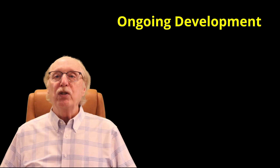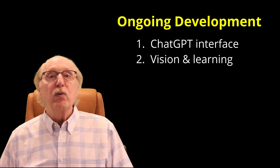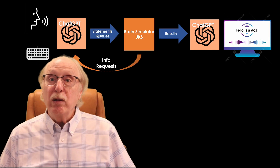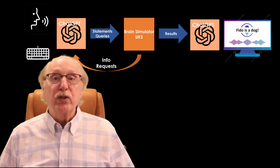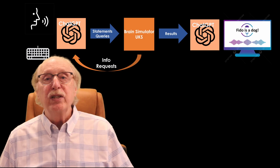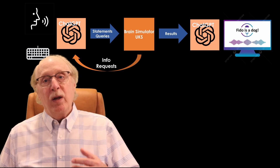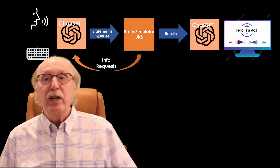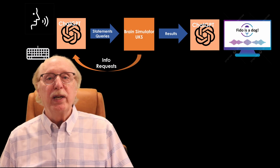Ongoing development is focused on making the UKS more accessible and more powerful through new interfaces. One project is the ChatGPT interface, which will use a large language model to translate everyday English into structured UKS knowledge and queries. In addition, information can be bulk added to the UKS — the LLM can be treated as a source and generate hundreds of facts about any concept in a form which will flow directly into the UKS.